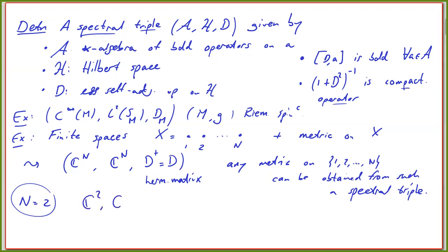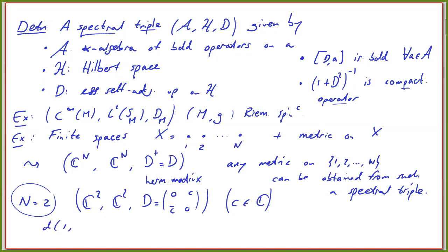Let's look at the spectral triple on this two-point space. The matrix D has off-diagonal entry C, a complex number. Diagonal elements in D don't matter much because in the commutator with algebra elements they will not be relevant. If I compute the distance between points 1 and 2, it is the supremum over A in C^2 of |A(1) − A(2)| with the condition that the norm of the commutator of D with A is less than or equal to 1.